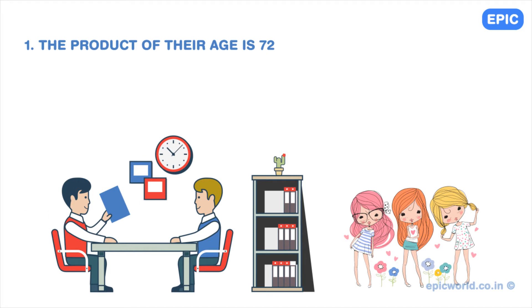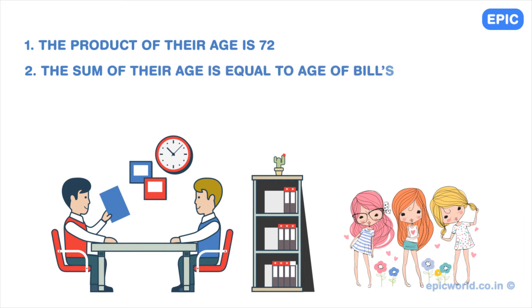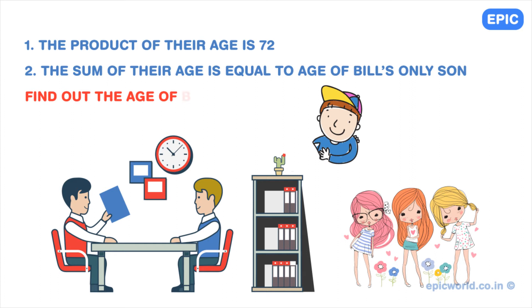Donald gives Bill another hint: the sum of the ages of his three daughters is equal to the age of Bill's only son. Bill maintains that he still does not have sufficient information. If you want, you can deduce the age of Bill's only son now.